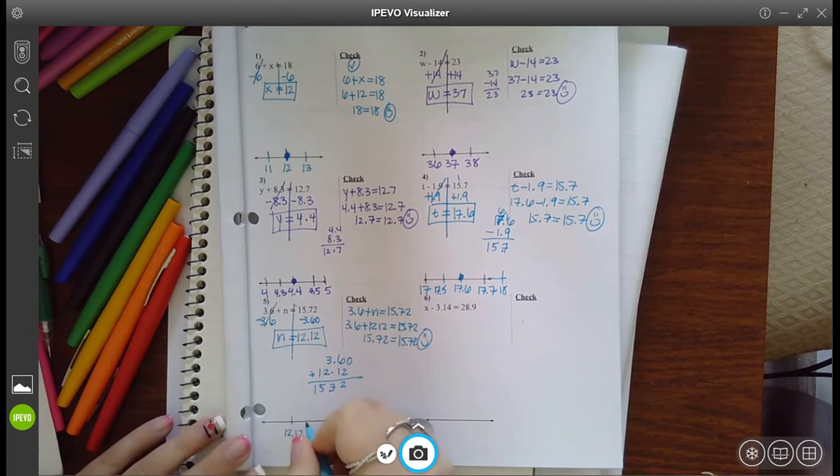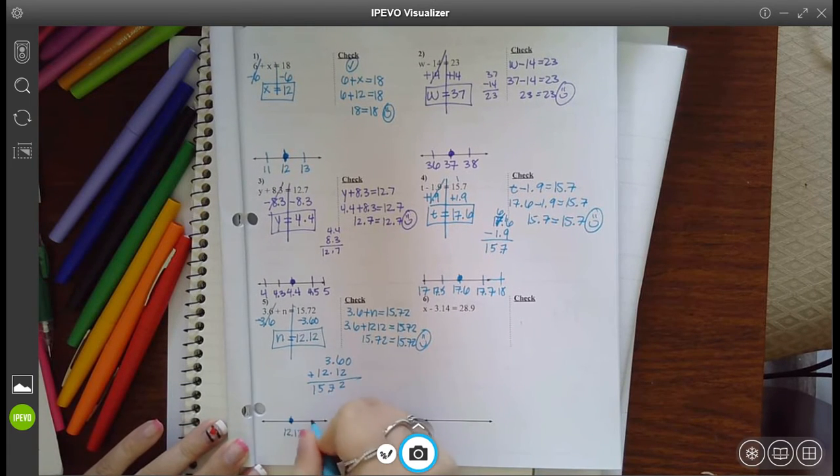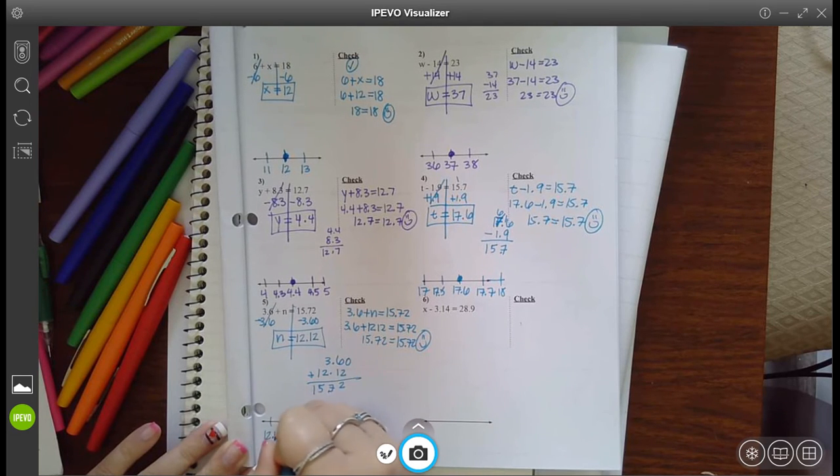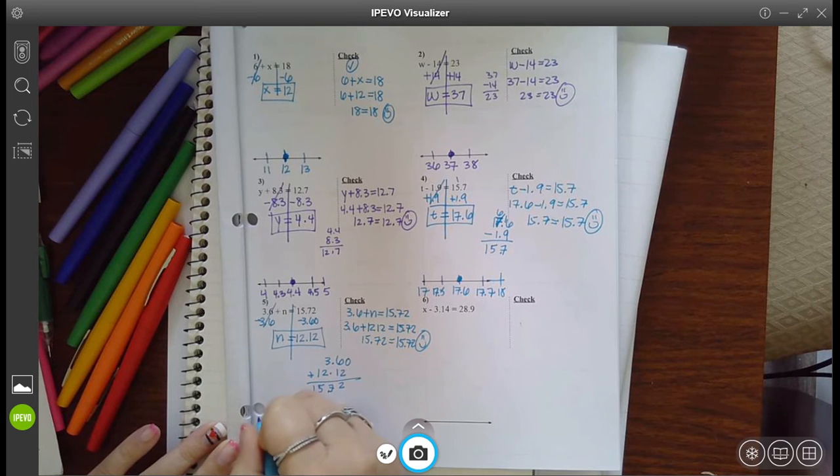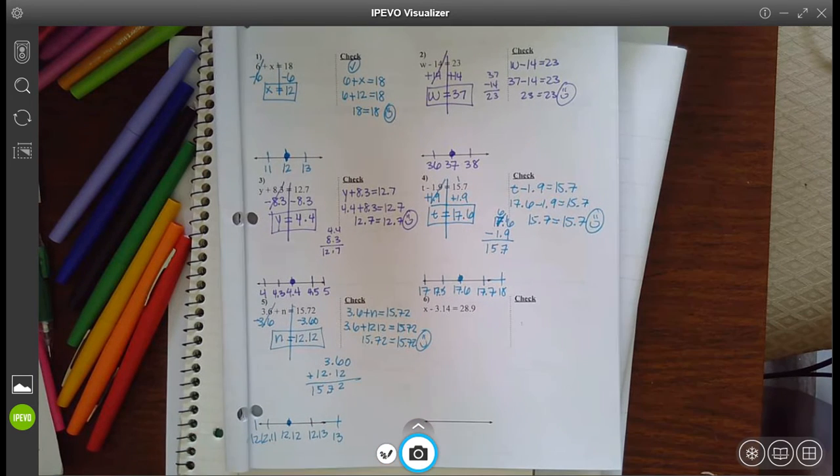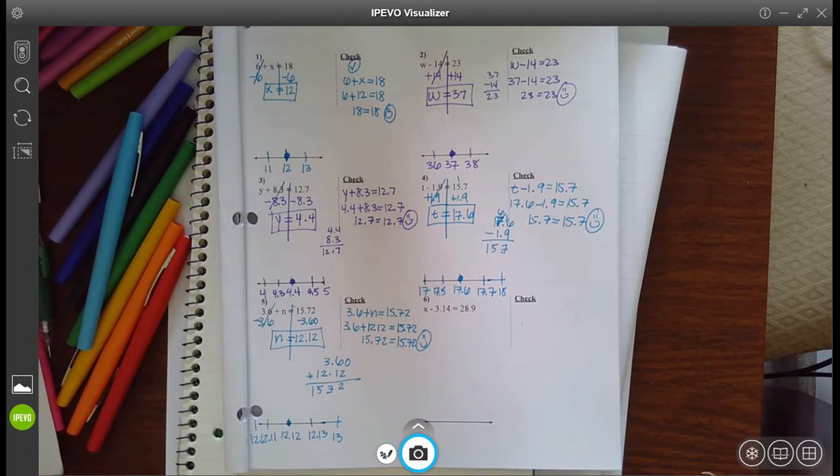which means 12.12 is indeed the correct answer. And that's between 12.13 or 12.11, or you also could have said it's between the whole numbers of 12 and 13. If you're getting all these correct, good job.